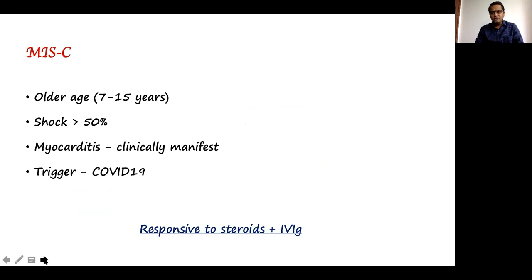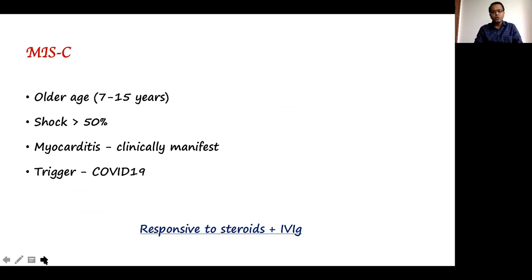MIS-C typically affects older children. About 50% of them usually present with shock, meaning many require PICU care. Myocarditis here is clinically manifest, the trigger is COVID-19, and the good part is that most children are responsive to steroids and intravenous immunoglobulin.